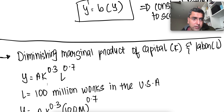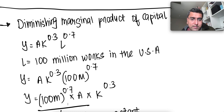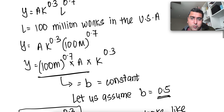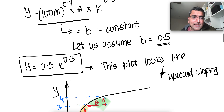Now let's look at why the Cobb-Douglas function has diminishing marginal product of capital and labor. Assume we're looking at the United States with 100 million workers, so L = 100 million. Substituting into the equation gives y = A · K^0.3 · (100 million)^0.7. The term A · (100 million)^0.7 is a constant — let's call it b, and assume b equals 0.5. So the function reduces to y = 0.5 · K^0.3.